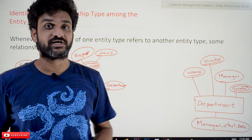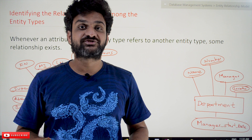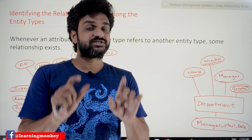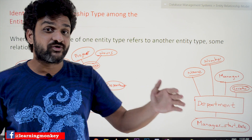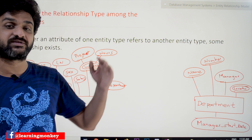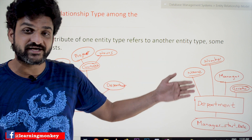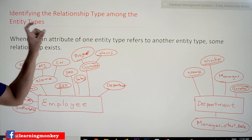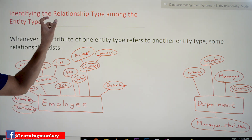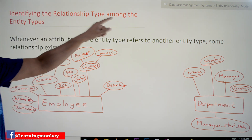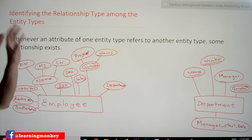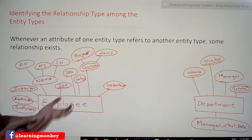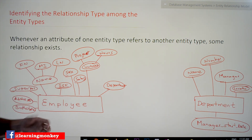If you haven't watched that video, please watch it and come back here, because understanding how entity types are obtained from the requirements is very important. Every video on our channel is part of a course or playlist, and our suggestion is to follow the entire course for better understanding. The link for the playlist is provided in the description below. Now, what is a relationship type among entity types?